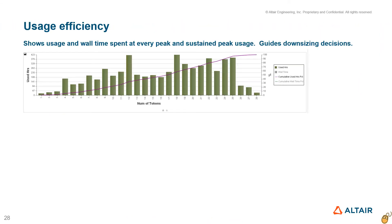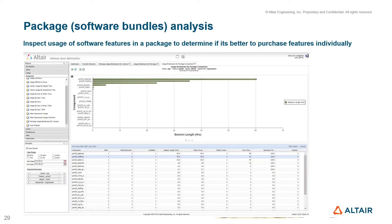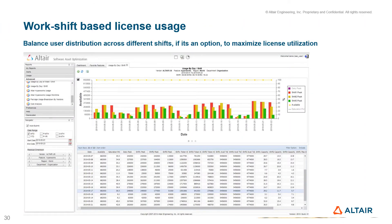The usage efficiency report shows usage and wall time for each license count and sustained peak percentage. Package analysis includes a ranking chart for all software included in a package or bundle. It is also possible to configure a shift-based peak usage report that can help balance user distribution across work shifts.